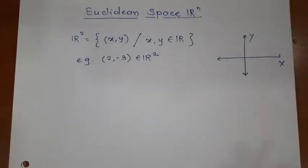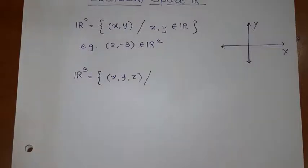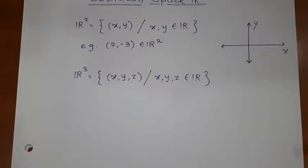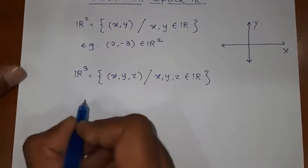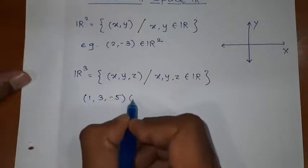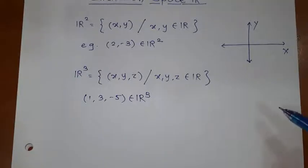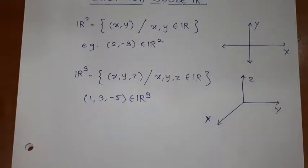Similarly, we have R^3 also. In R^3, we have an ordered triplet (x, y, z) where x, y, z all are real numbers. Can you give me an example of R^3, one element of R^3? If I consider (1, 3, -5), this is an element of R^3. When you draw the diagram, we have three axes: x-axis, y-axis and z-axis.